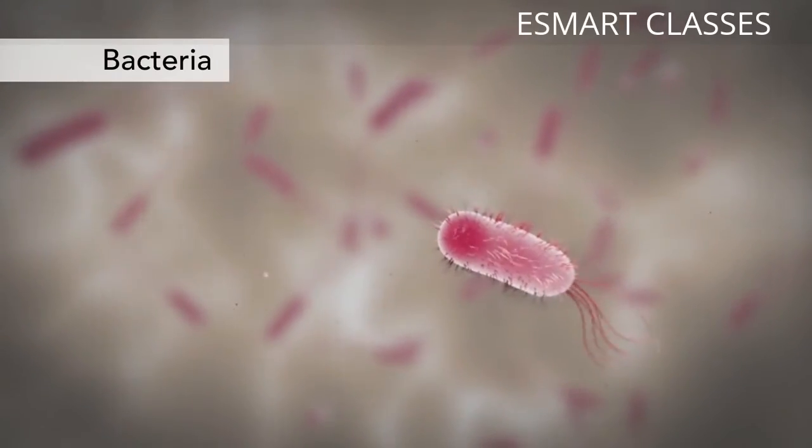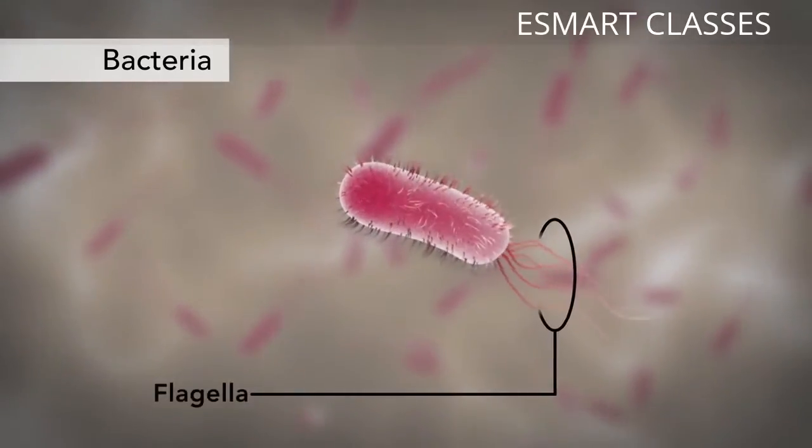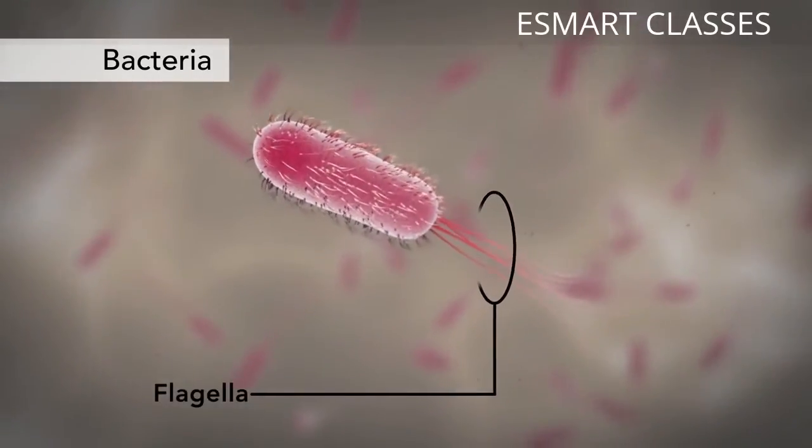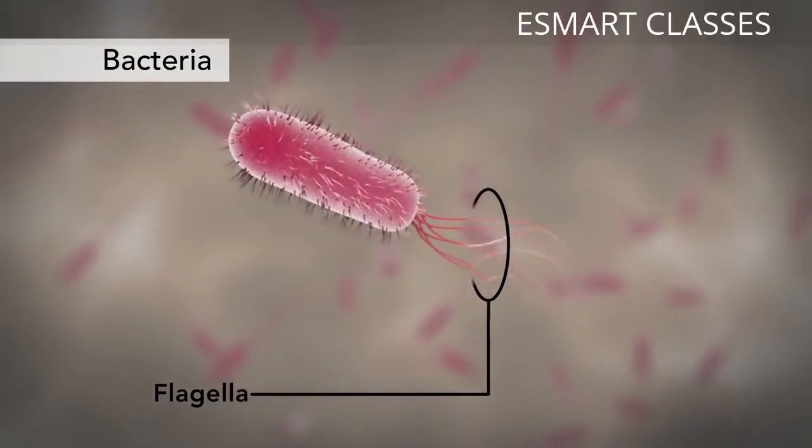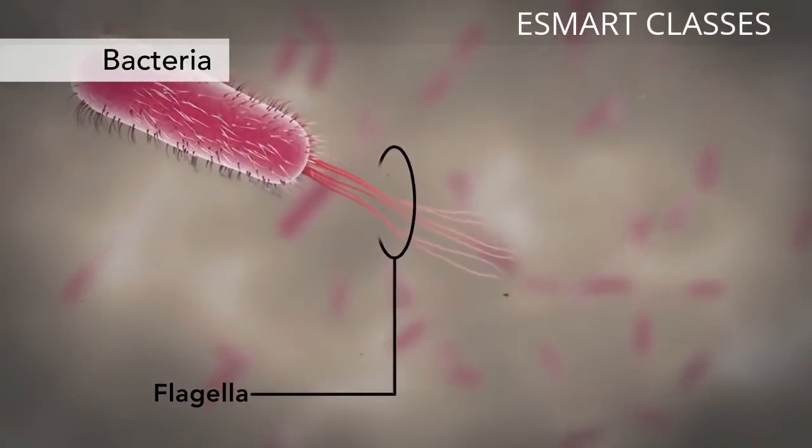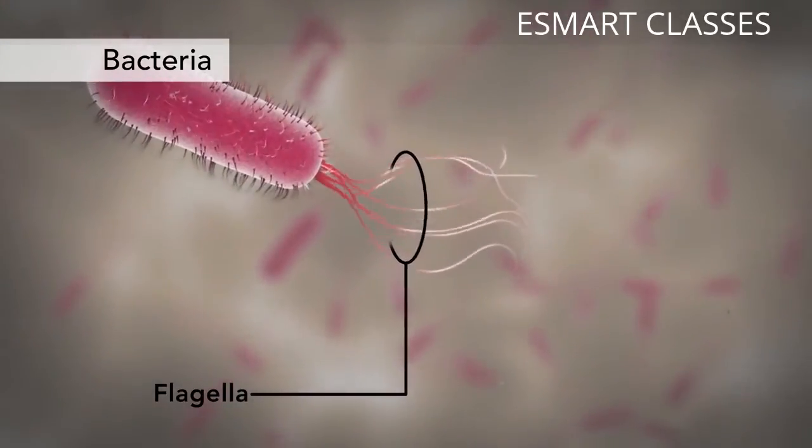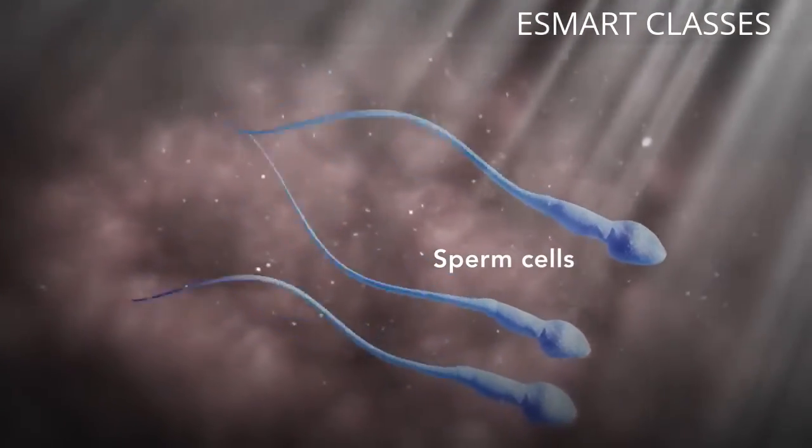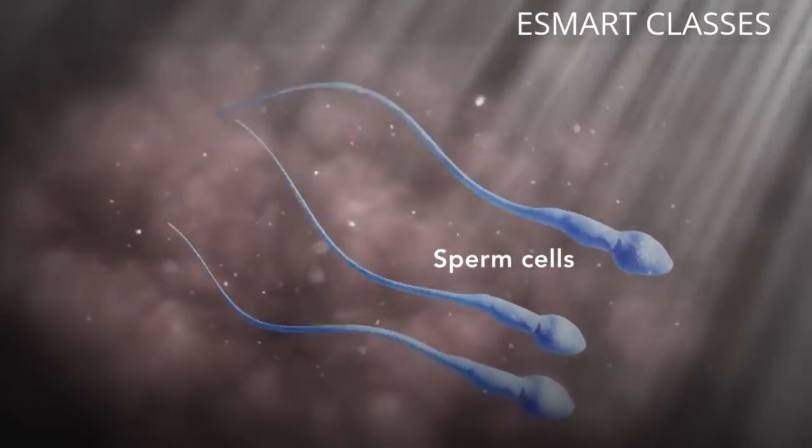Another unique feature in some cells is flagella. Some bacteria have flagella. A flagellum is like a little tail that can help a cell move or propel itself. The only human cell that has a flagellum is a sperm cell.